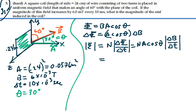I forgot to mention, we have two turns. Keep that in mind. So our number of turns is two. Our area is 0.0576 meters squared.